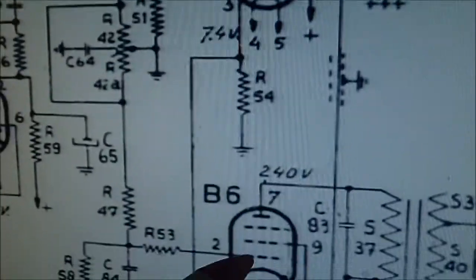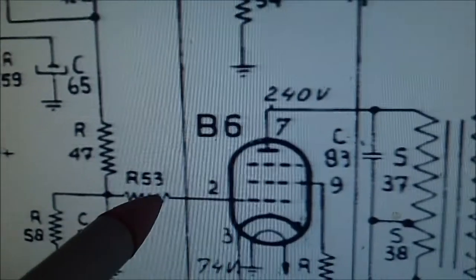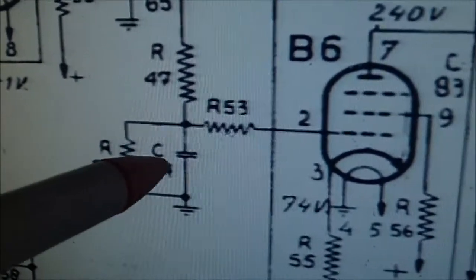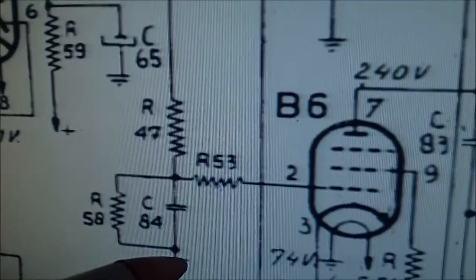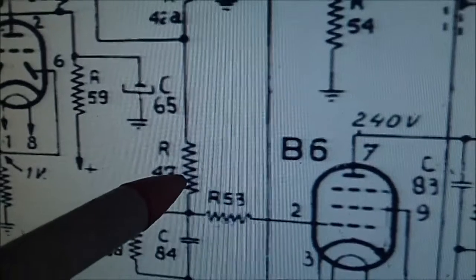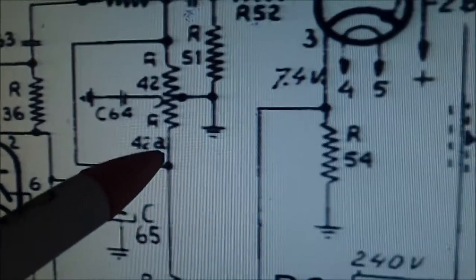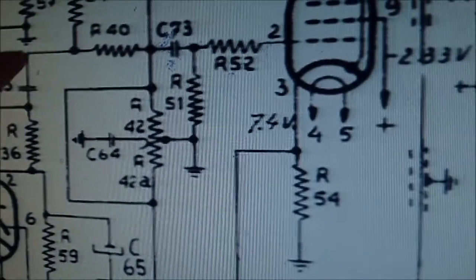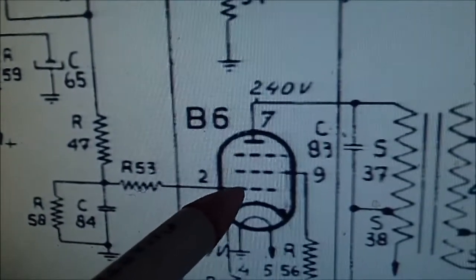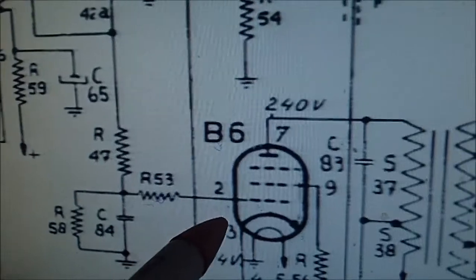What's puzzling is on your second 6BQ5 which is B6, here's your 1000 ohm resistor then you got a cap here which I'd have to look it up, C84, it goes to ground so that is not a coupling capacitor. The resistor shunts that out. I do not see a coupling capacitor to block the DC on the grid of the B6 6BQ5.